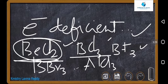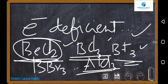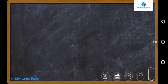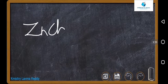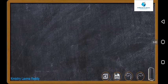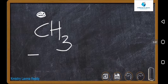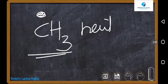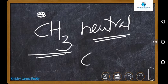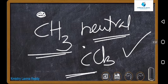For BCl3, BF3, BBr3, and AlCl3, there are three bonds each — six electrons — so they need two more electrons. ZnCl2 is also an example. Along with these, free radicals like CH3• and CCl3• are also neutral electrophiles, as they are in need of electrons.